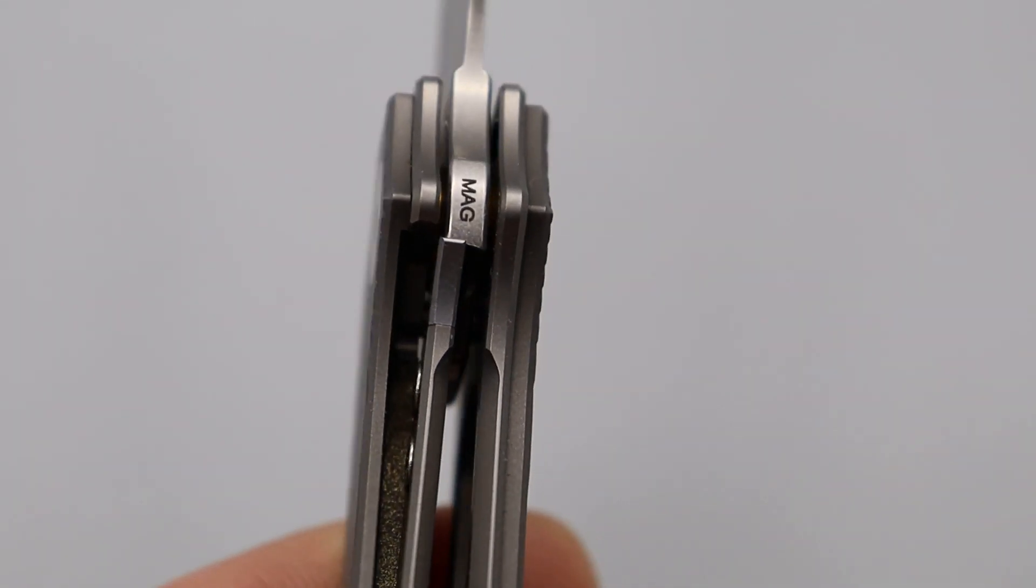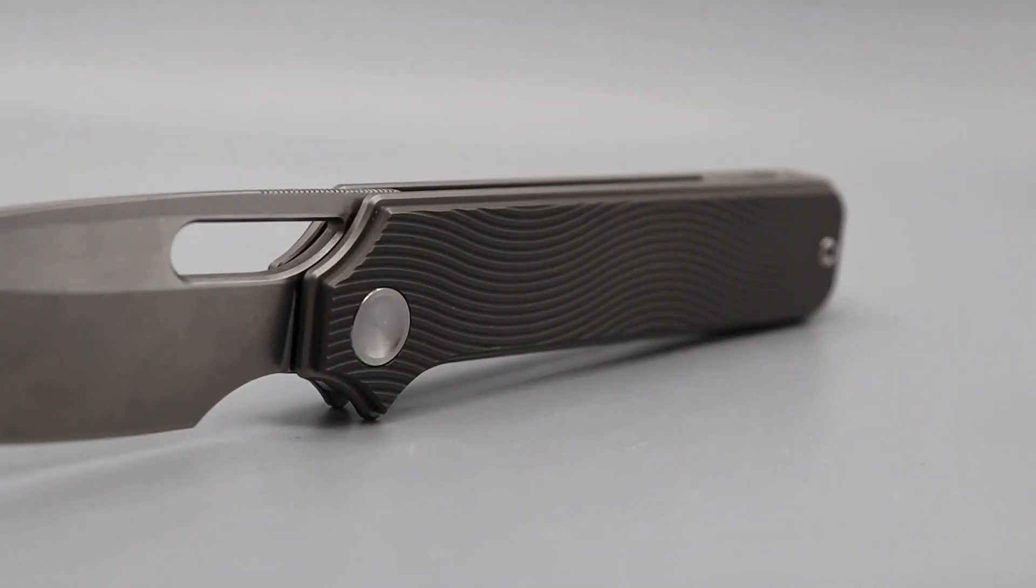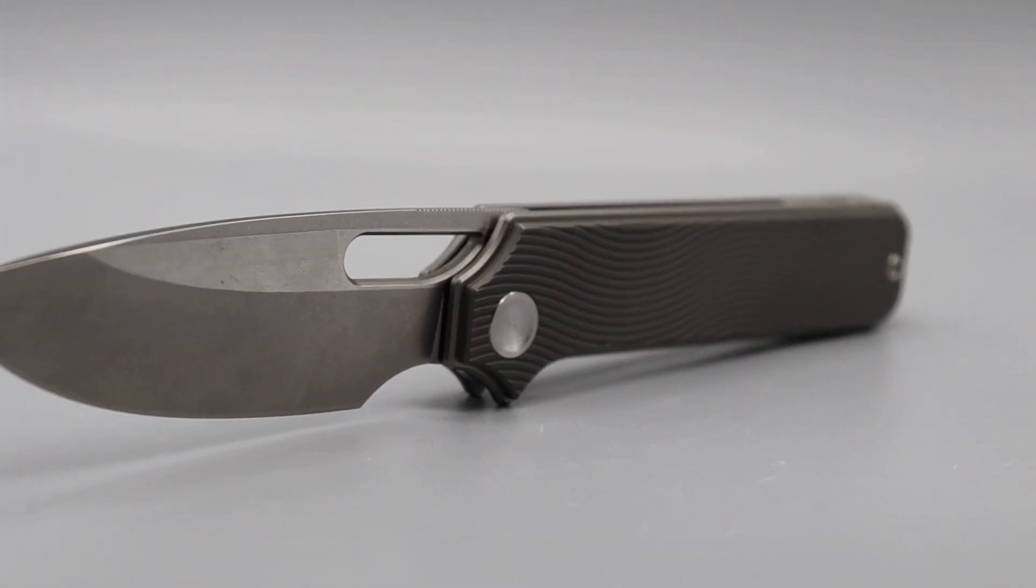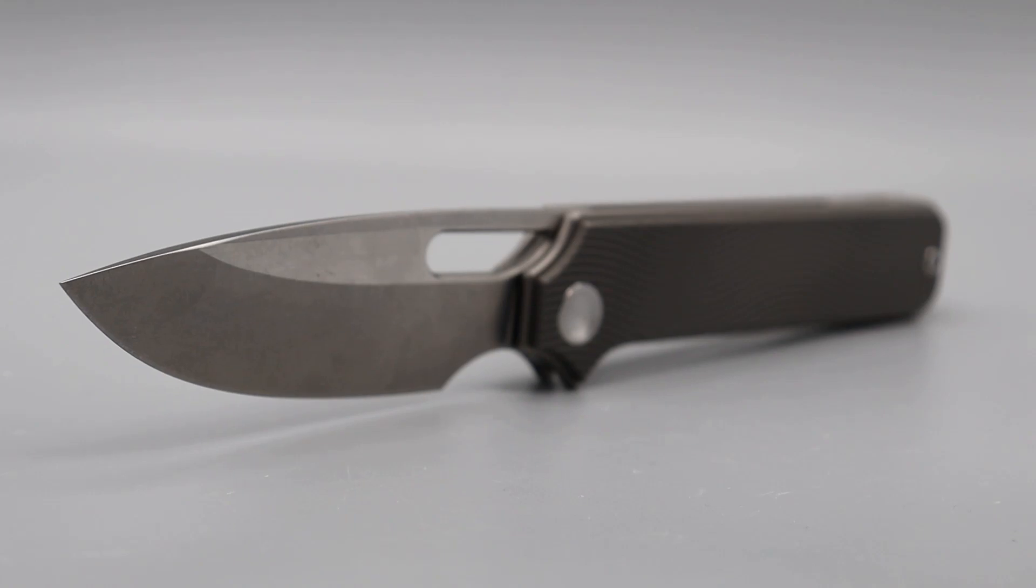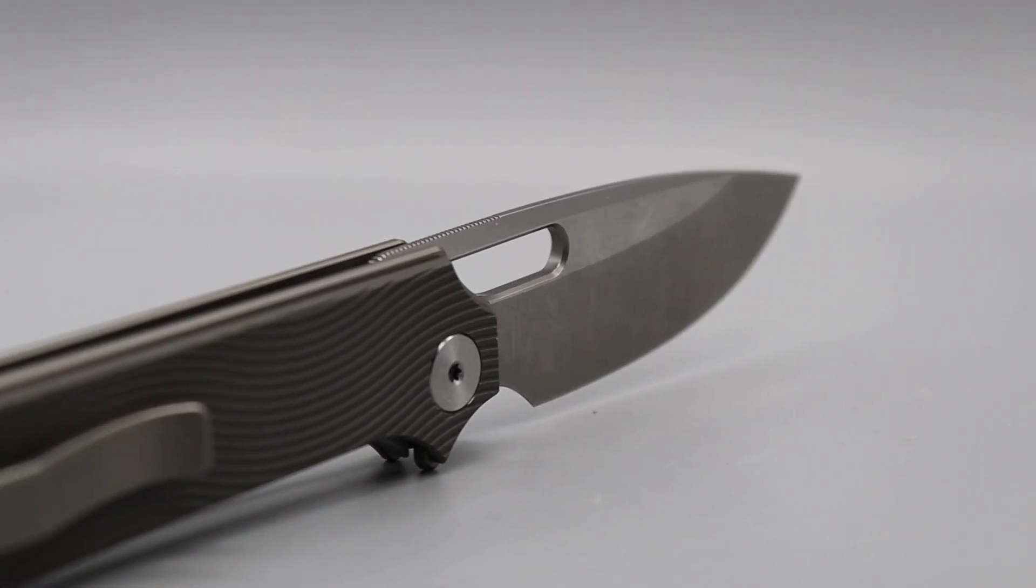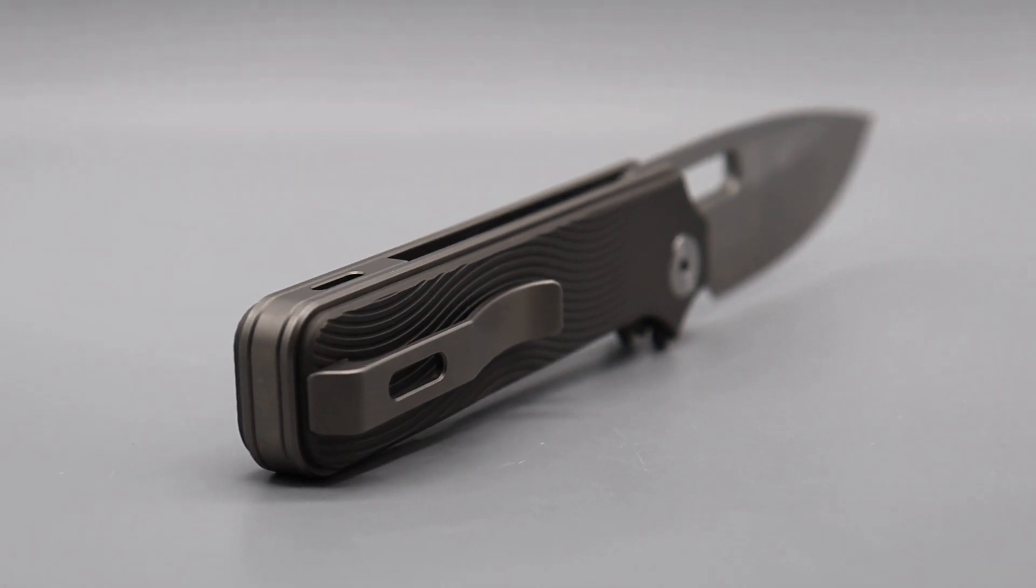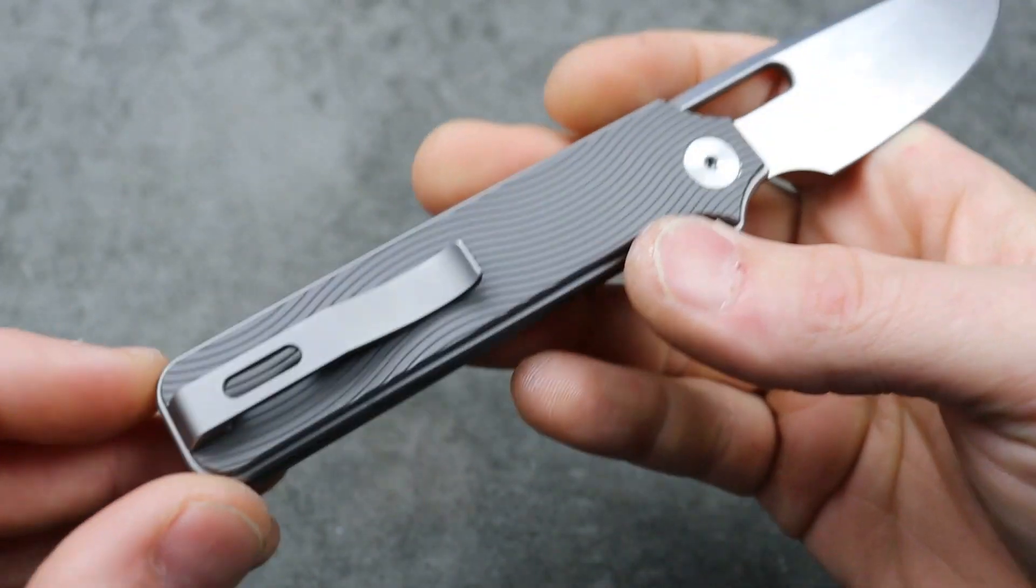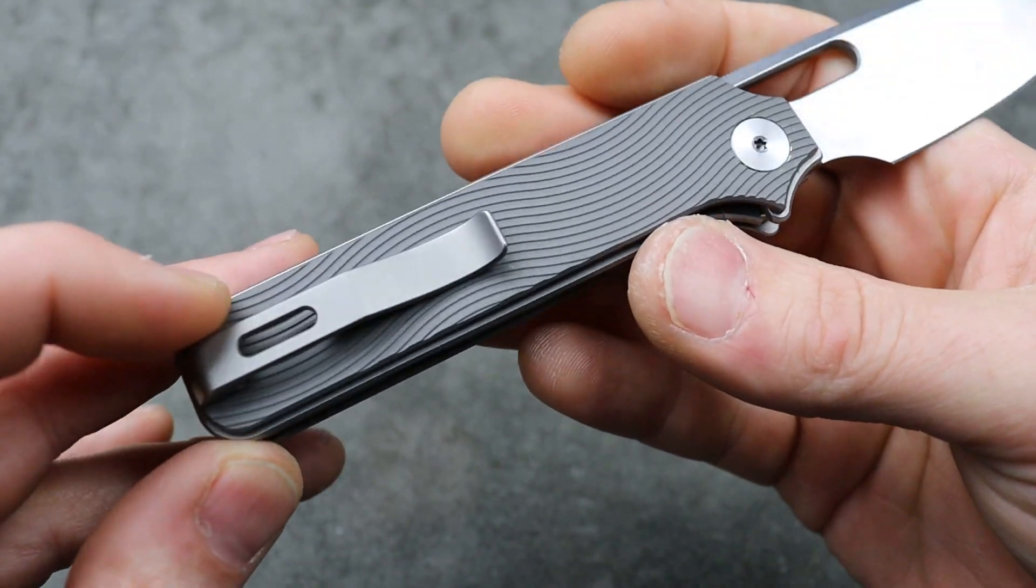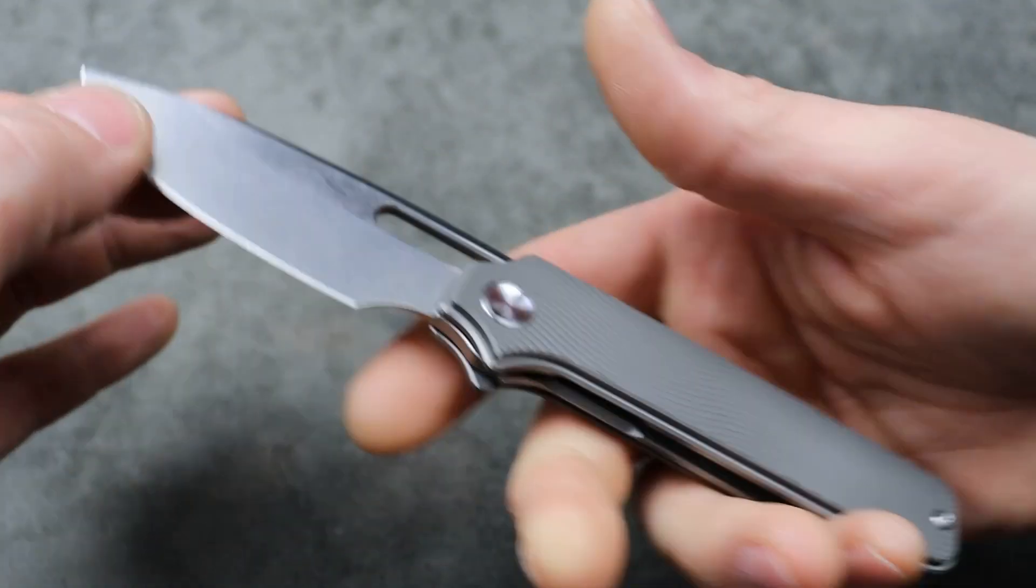Drop point blade, flat grind, perfect sharp choil and plunge grind and finger choil. Very comfortable in the hand back here. Yeah, I feel the clip a bit, but it's still comfortable. I'm not going to complain about it. And the clip does work good in and out of the pocket. I did try that out. So very cool on that.